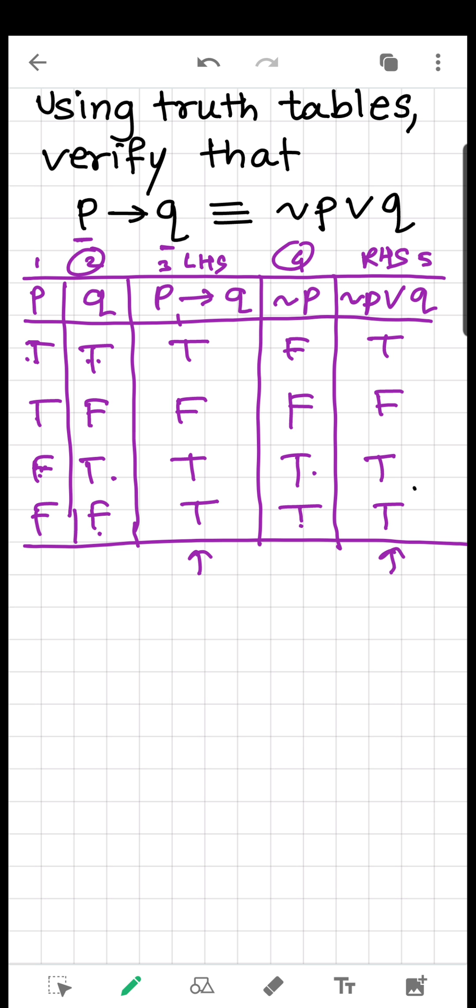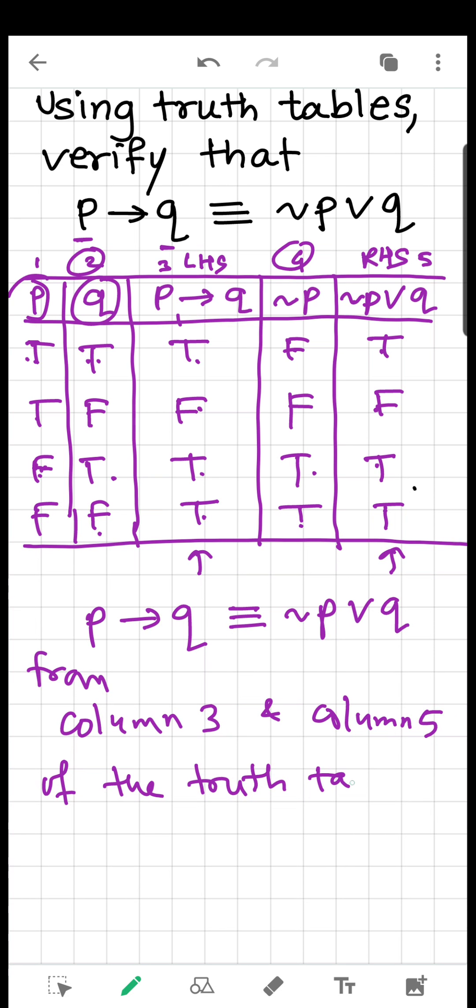So we have completed our truth table where we have got the truth values for the left hand side and the right hand side. What are those? True, false, true, true. And here also true, false, true, true. So this means that whatever combination P and Q have, P implies Q and not P or Q - both have the same truth values. That's why we can say they are equivalent from column 3 and column 5 of the truth table. This is how we will prove the equivalence by truth table in the board examinations.